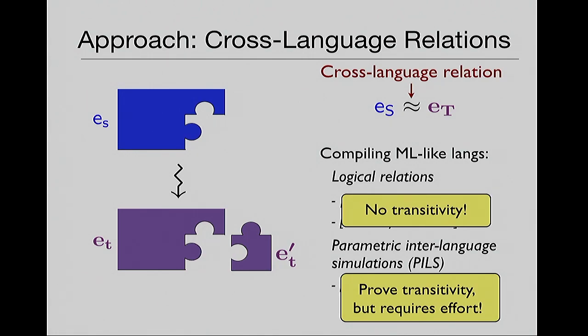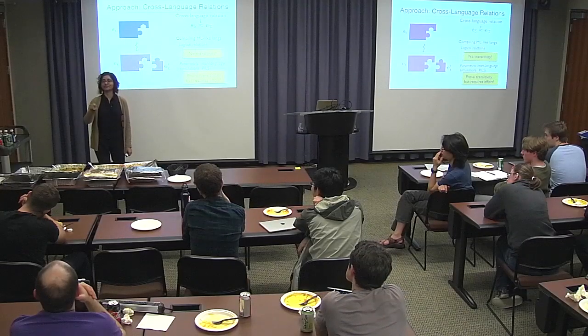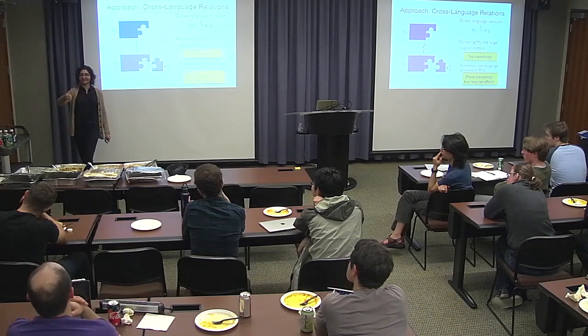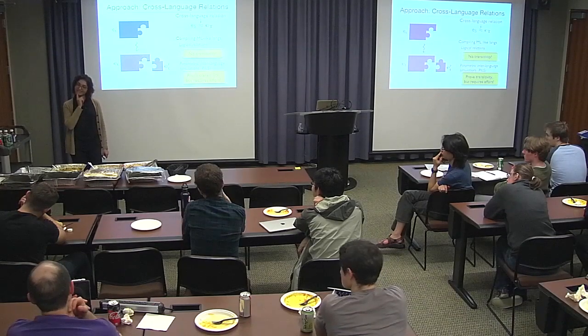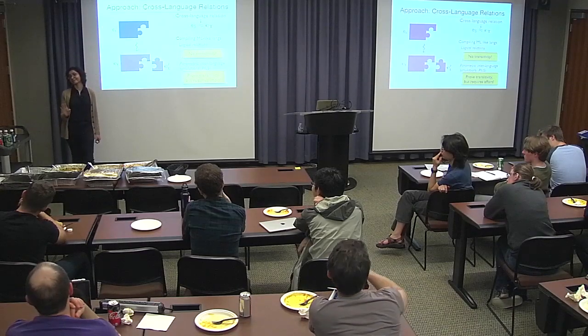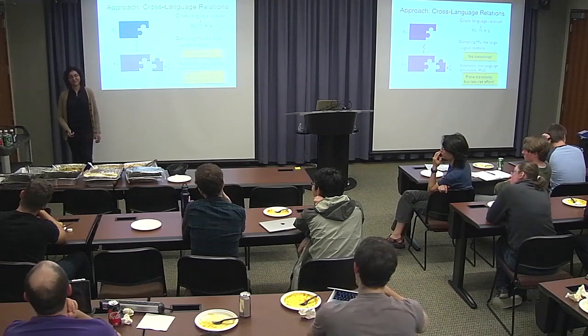When you have more than two passes, does it get quadratic? That's a really great question. I don't know because no one's done it. The Pilsner paper has a source, then an intermediate language I in which they do many passes from I to I itself, and then they go from I to T. They essentially crafted particular relations so that they could prove transitivity and verified a multi-pass compiler. But it requires a lot of effort because they still have a relation between source and intermediate, another between intermediate and target, and they need to show that if those two hold, then the source-to-target relation holds.